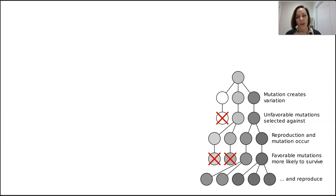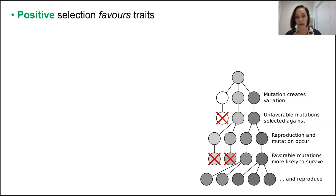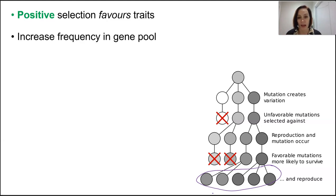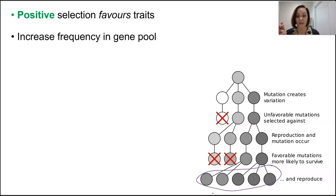Selection pressures work either for or against a certain phenotype and the alleles that create them. Positive selection favours a particular heritable trait which can increase in frequency in the gene pool. These alleles can even reach a point where all individuals in the population show that trait — this is called a fixed gene.